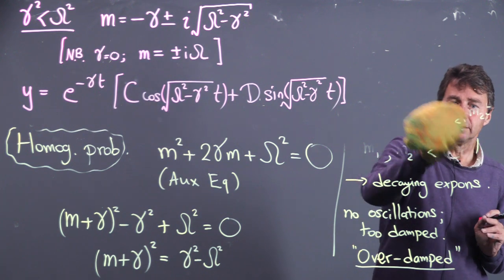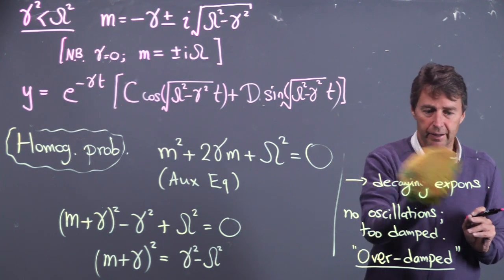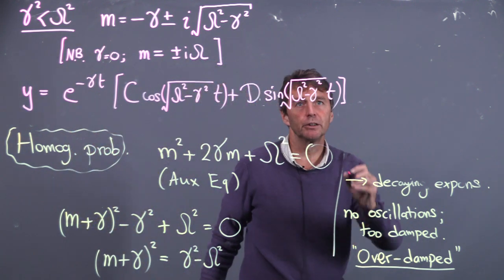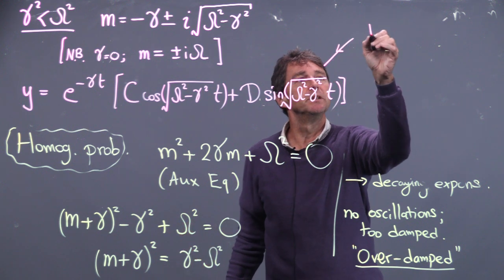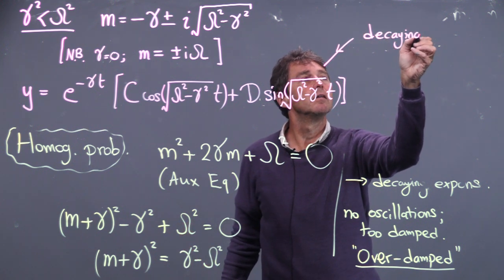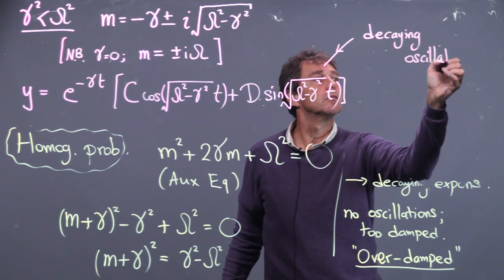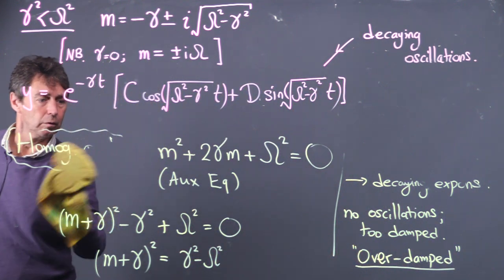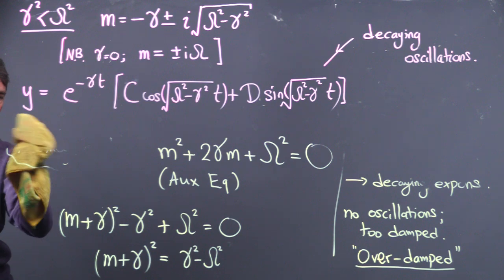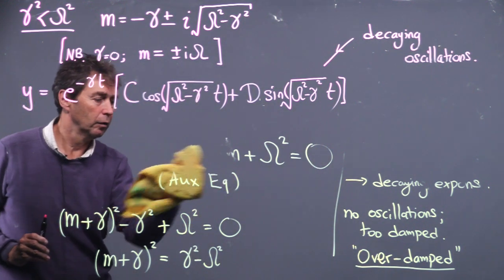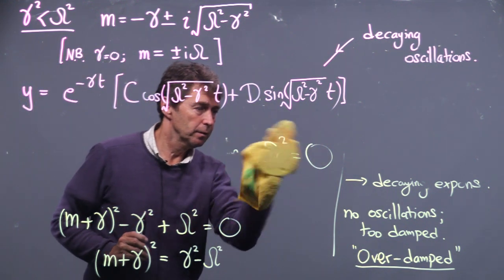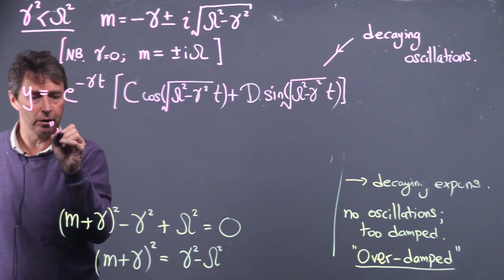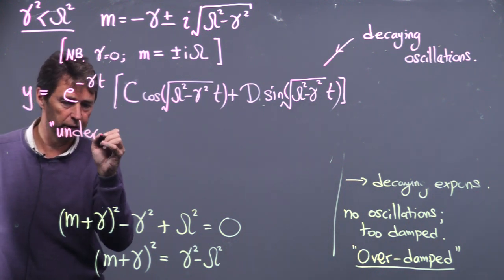The system can now oscillate — the sines and cosines provide oscillation — but there is the exponential factor e^(−γt) out front, which decays. So these are decaying oscillations. Since the damping is not strong enough to stop the oscillations, this is called underdamped.